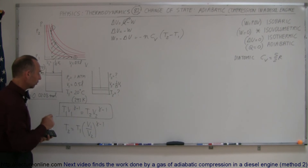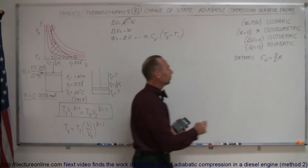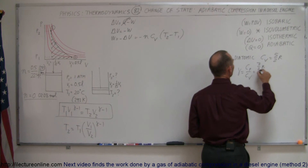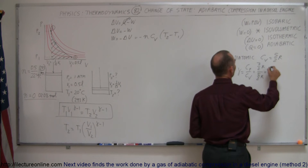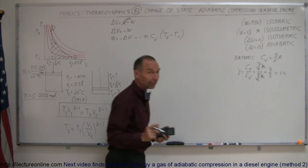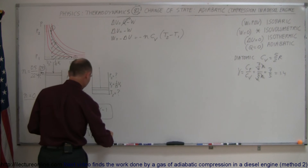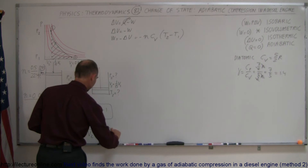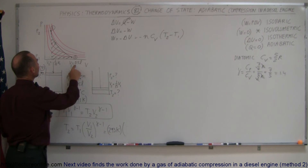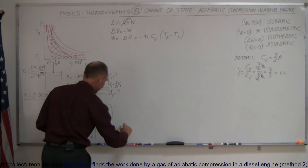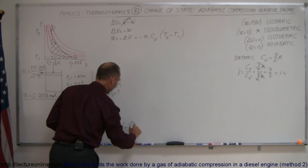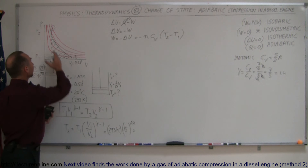The only remaining unknown is gamma. For a diatomic molecule, gamma equals Cp over Cv, which is (7/2 R) divided by (5/2 R). The R's and 2's cancel out, giving 7/5, which equals 1.4. So gamma minus 1 equals 0.4, which is the exponent we'll use. V1 is 15 times as big as V2, so the ratio V1/V2 equals 15.